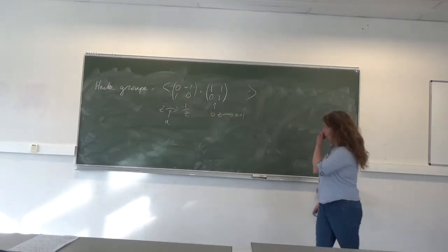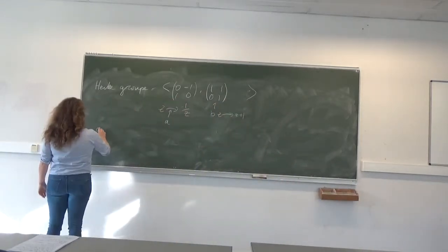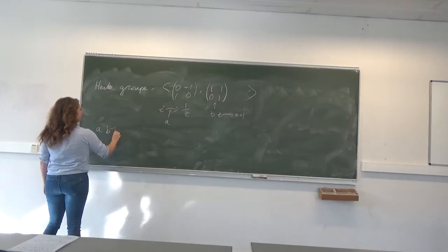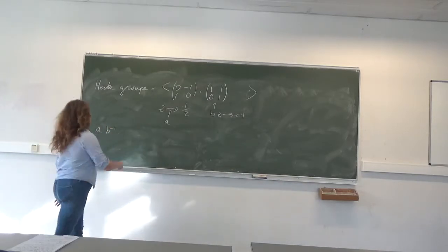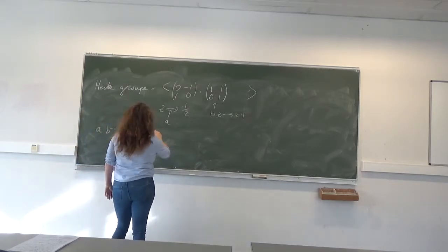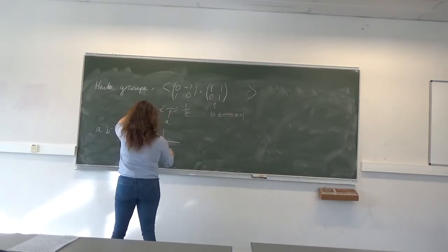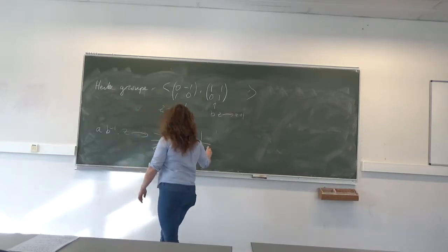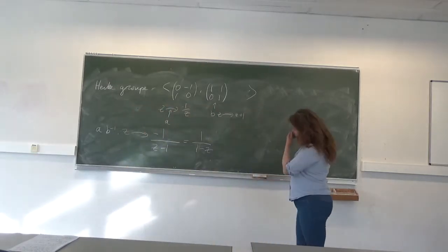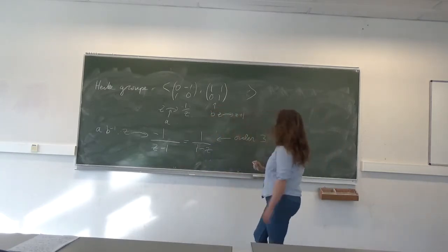And now, if I look at ab^(-1), this takes z to -1/(z-1), which equals 1/(1-z), and this, you can check, is of order 3.